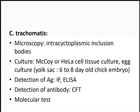If culture facilities are available, we can culture chlamydia. Since it is an obligate intracellular parasite, it cannot be cultured on artificial media and requires tissue culture or egg culture. For tissue culture, McCoy or HeLa cells are used; for egg culture, the yolk sac of a 6 to 8 day old chicken embryo is used. Antigen detection can be performed by immunofluorescence or ELISA, using a smear treated with fluorescein-tagged monoclonal antibodies and examined under a fluorescent microscope.